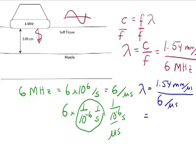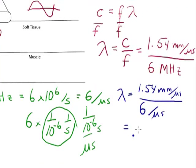Which I can calculate, just divide these two. And if I do that on a calculator, I should get 0.257 millimeters.